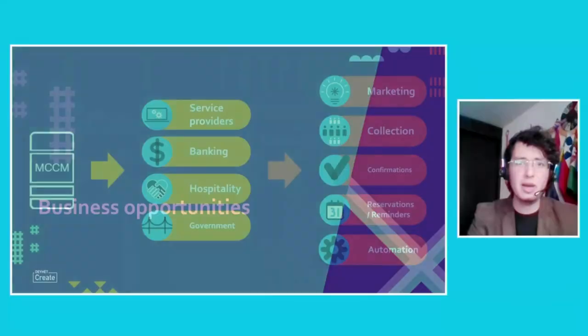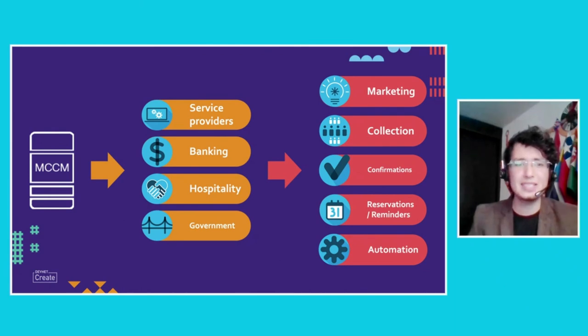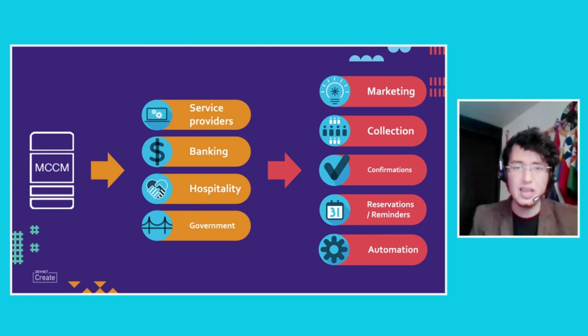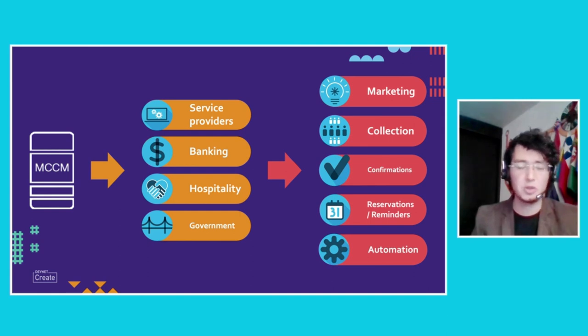Next I'd like to highlight the business opportunities we see with this approach. We used the MCCM platform specifically for dunning in this case, but it can be adjusted for any given reachability purpose — from service providers, banking, hospitality, and government. We can push intelligent multi-channel notifications to people based on any purpose such as marketing, confirmations, reservations, and so on.